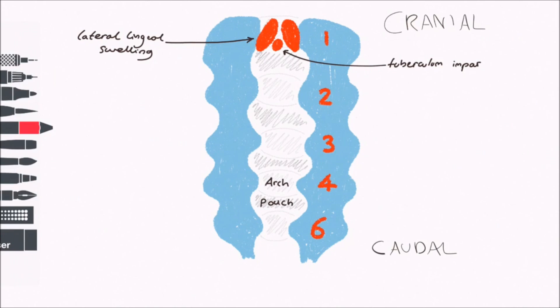The posterior one-third of the tongue forms from a single median swelling called the copula or hypobranchial eminence. This forms from the second to the fourth pharyngeal arch.